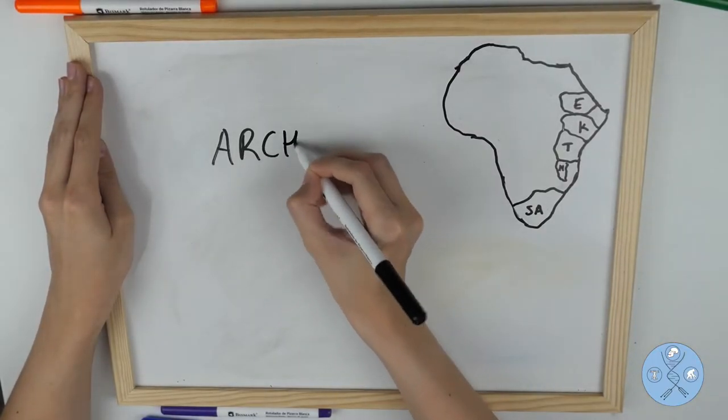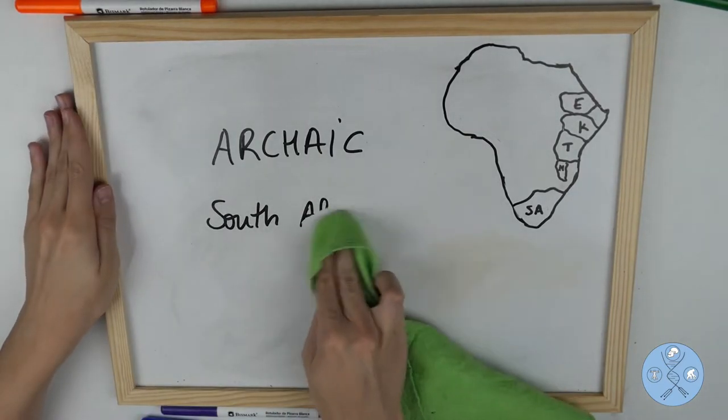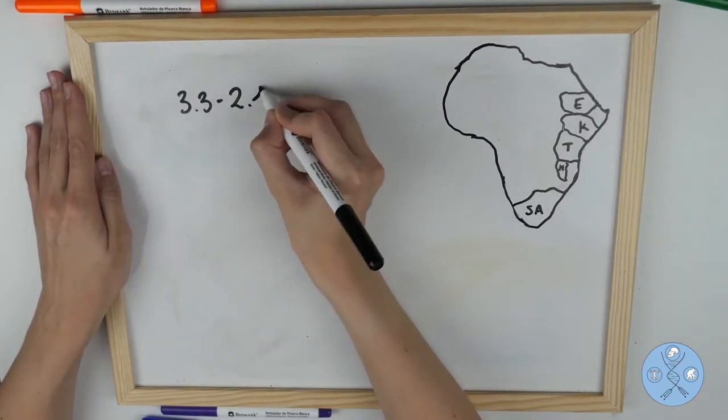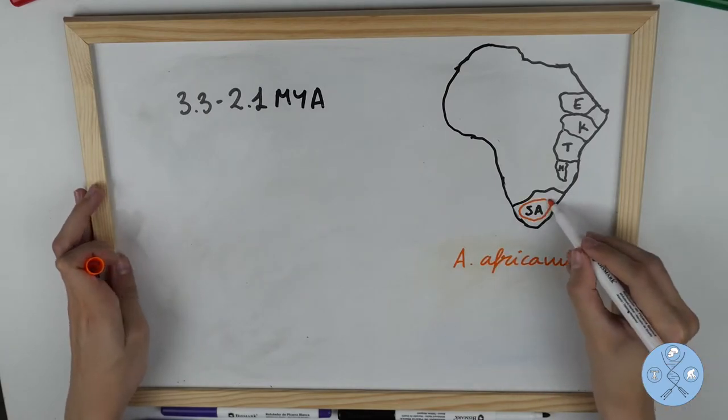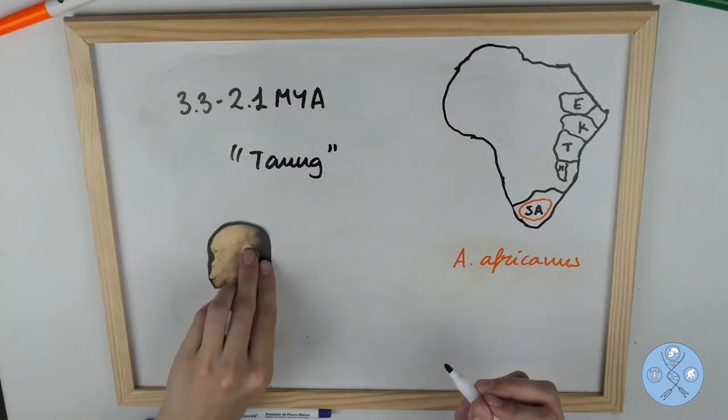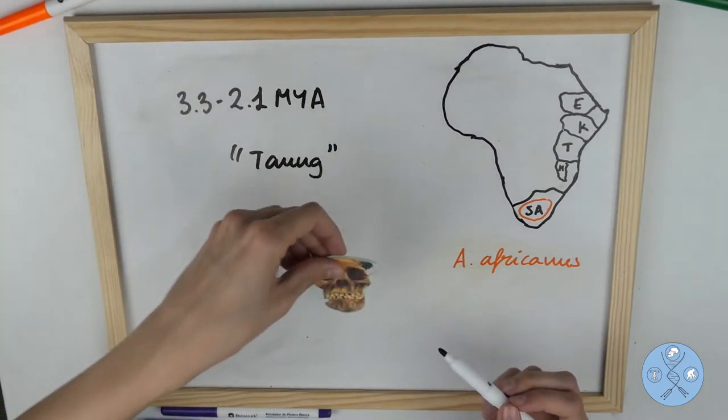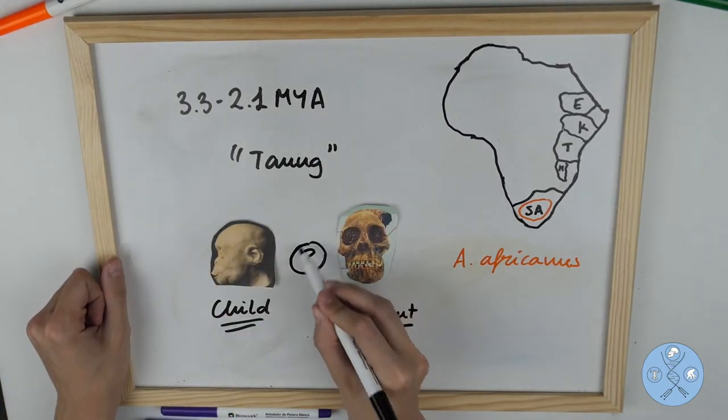The next type we are going to talk about are also archaic hominins, but mostly from South Africa. Between 3.3 and 2.1 million years ago, a new species called Australopithecus africanus appeared in South Africa, probably at Taung, where a skull of a hominin child was discovered in a small cave. Several discoveries later, they discovered new specimens and observed that they were different from Australopithecus africanus.